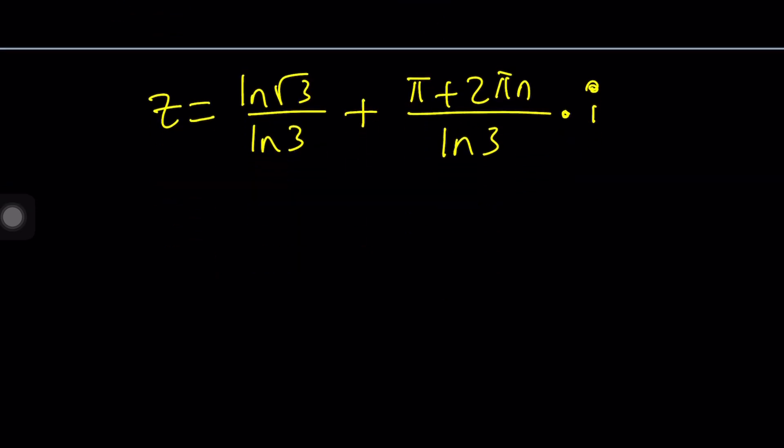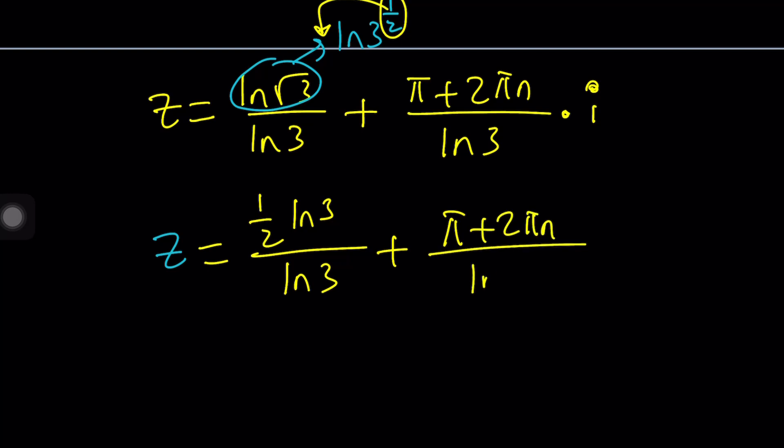We can leave it like that, but we like to simplify things as much as possible. And of course, teachers like them too. A lot of times, you're going to lose points if you don't simplify your answer. We can do that by writing ln root 3 as ln 3 to the power 1 half. And we have a logarithmic rule that says you can bring it to the front. So it's going to be 1 half ln 3 divided by ln 3. And that's just awesome.